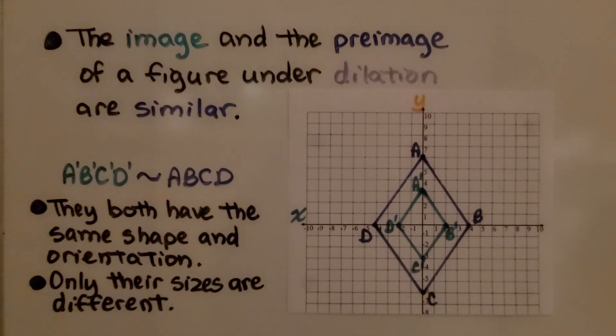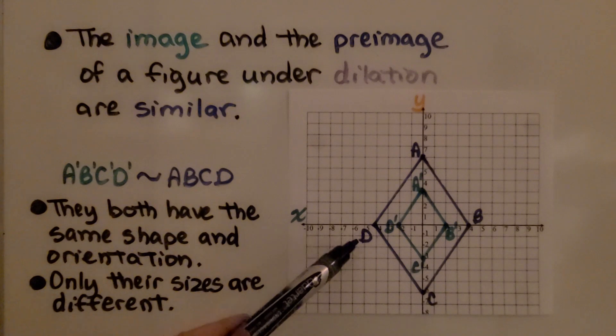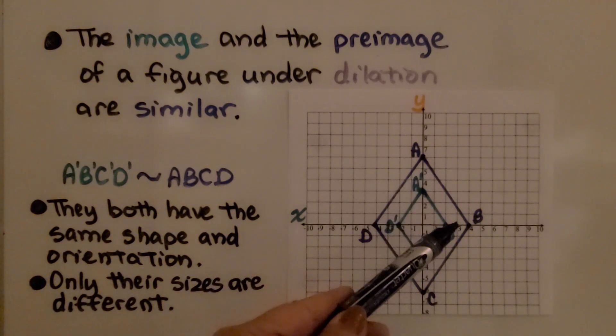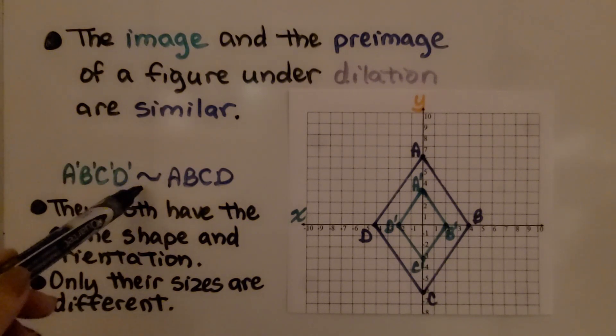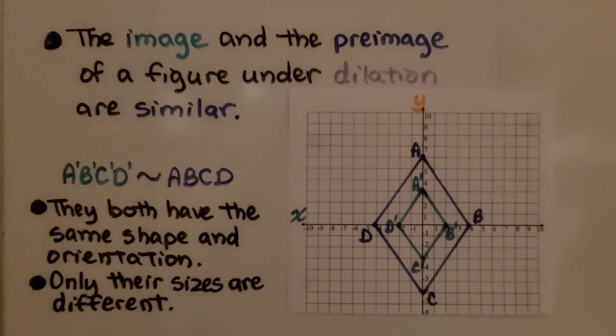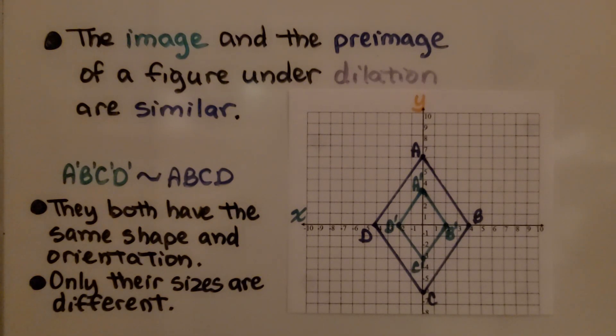The image and pre-image of a figure under dilation are similar. We have this quadrilateral ABCD and we have its image A'B'C'D'. A'B'C'D' is similar to ABCD. Remember, that's the symbol for similar. They both have the same shape and orientation, only their sizes are different.